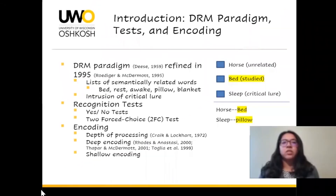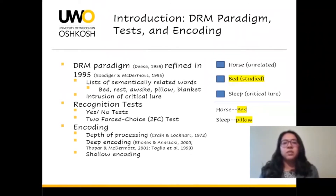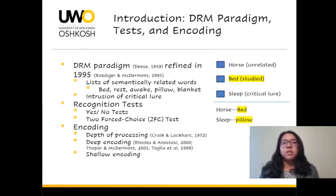Just a quick introduction to the DRM paradigm. The DRM paradigm is a method used to test false memories using lists of closely related words. Each list is built around a word called a non-presented critical lure. For example, you can see the words bed, rest, awake, pillow, and blanket — these could be presented and studied, and then the critical lure for this list would be sleep.